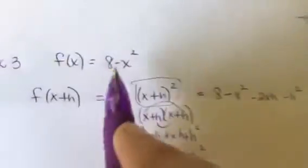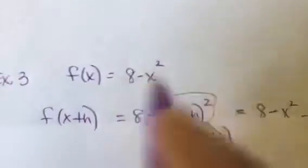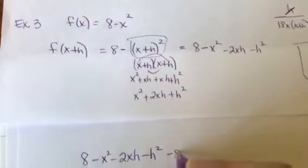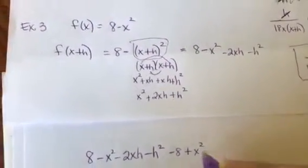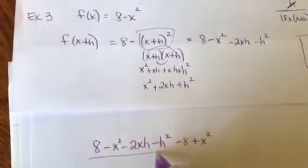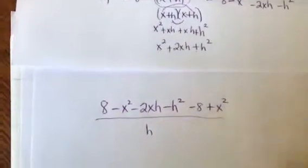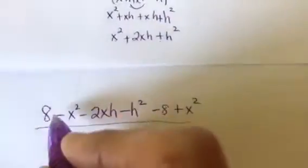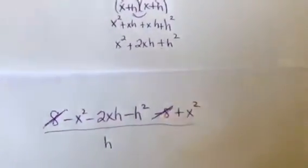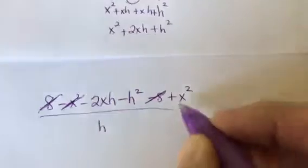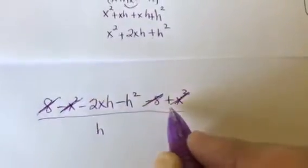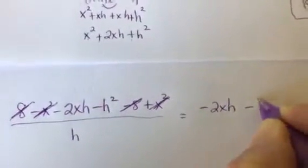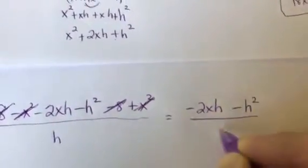When you subtract, you change all the signs. So it's going to be a minus 8 plus x squared. And remember, this is all over h. Don't forget that part. Okay, if you do it right, a lot of stuff is going to cancel. Notice my 8's cancel. My x squared's cancel because that one was a negative and that one's a positive. So I'm left with negative 2xh minus h squared over h.